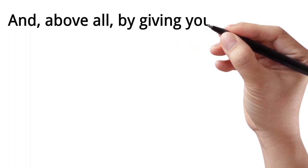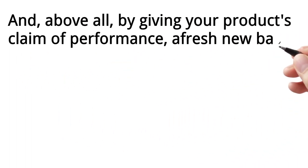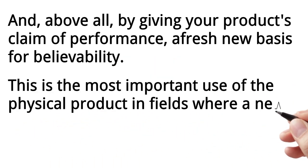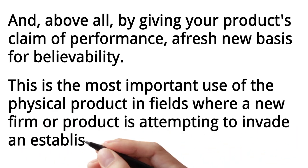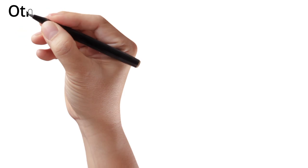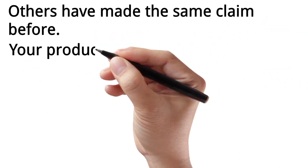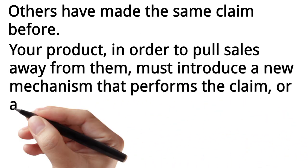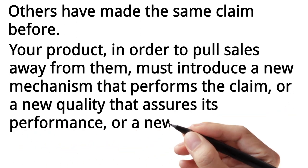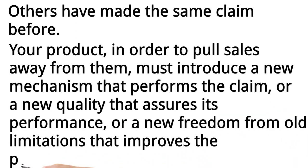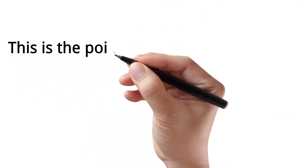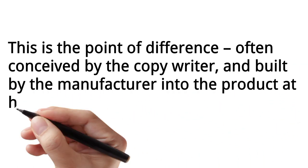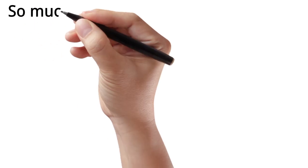And above all, by giving your product's claim of performance a fresh new basis for believability. This is the most important use of the physical product in fields where a new firm or product is attempting to invade an established mass market field. Others have made the same claim before. Your product, in order to pull sales away from them, must introduce a new mechanism that performs the claim, or a new quality that assures its performance, or a new freedom from old limitations that improves the performance. This is the point of difference, often conceived by the copywriter and built by the manufacturer into the product at his recommendation. So much for the physical product.